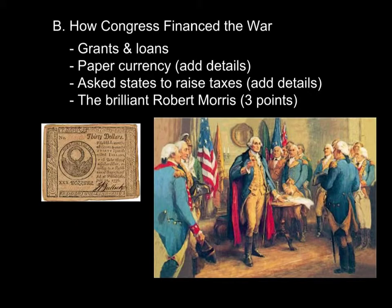Despite all of these restrictions, the Articles of Confederation government managed to do quite a lot of things. Number one, it was able to finance the war effort through several different means. It got grants and loans from several different foreign powers, and one of the largest contributing nations was France. It also gained money through issuing paper currency, so it started to print money.